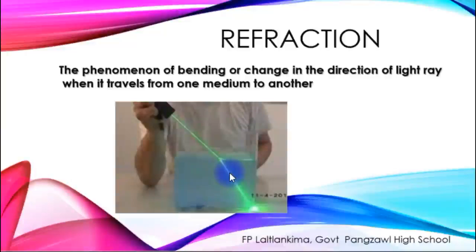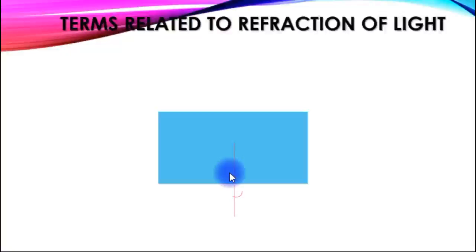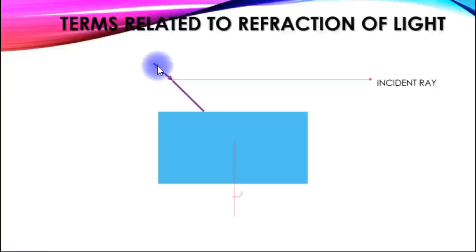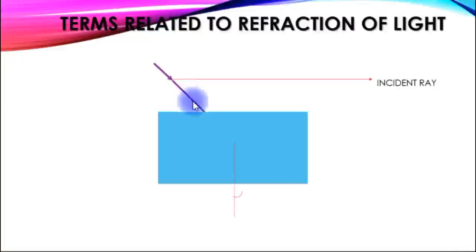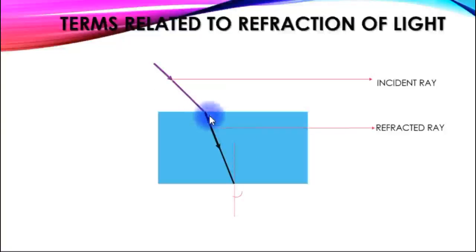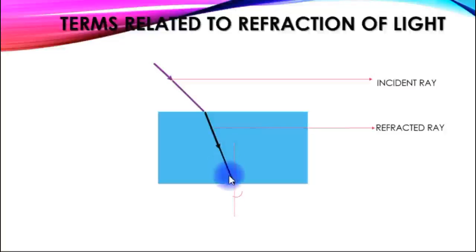Here is the incident ray. The incident ray is a light ray traveling through a medium. This is the refracted ray, which is the refracted ray after passing into the new medium.